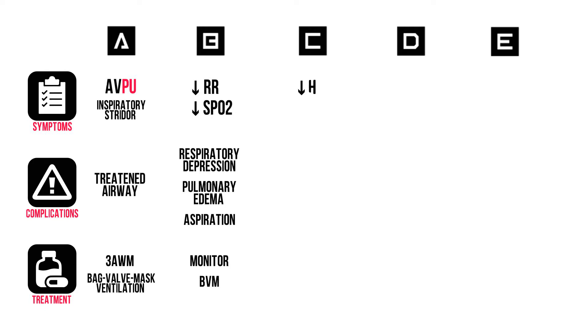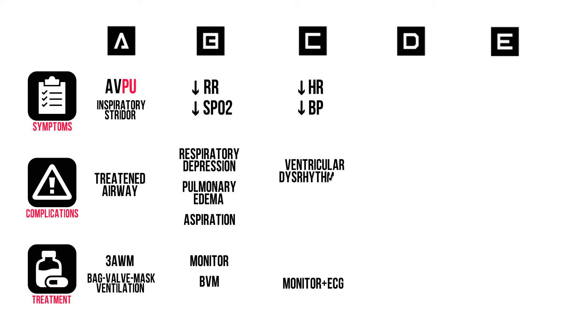In C: bradycardia and hypotension, though hemodynamic complications are usually not the most prominent. Keep them on the monitor, because they are at risk to develop ventricular dysrhythmias. And get an ECG.